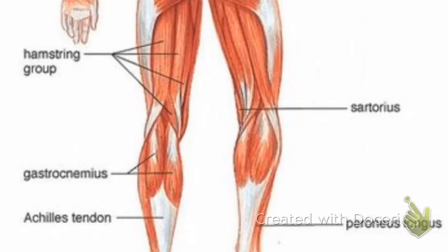Hamstring group and sartorius you've seen before. Gastrocnemius — if you've ever seen someone bicycling and you can see their leg, oftentimes the muscle you see most clearly is the gastrocnemius. The Achilles tendon attaches your gastrocnemius to the heel of your foot so that it can do work. Peroneus longus is an abductor, so it helps you rotate your foot away from your body while keeping it in the same plane.